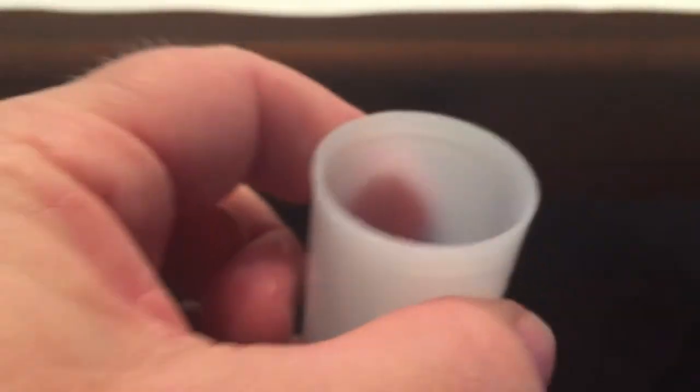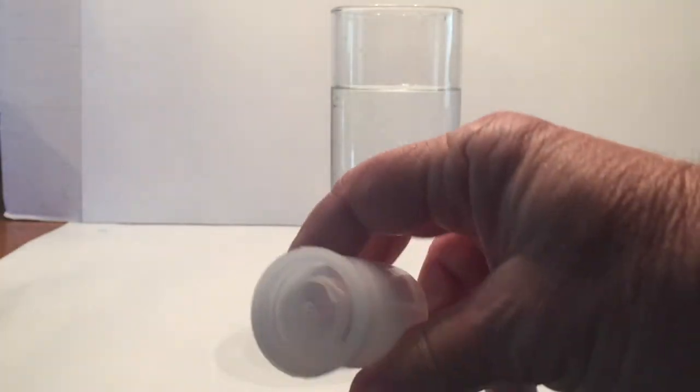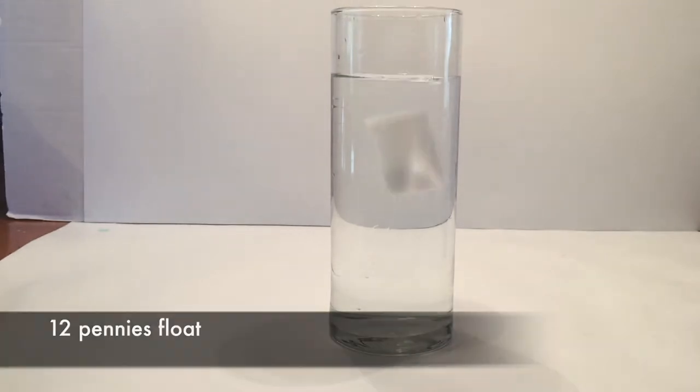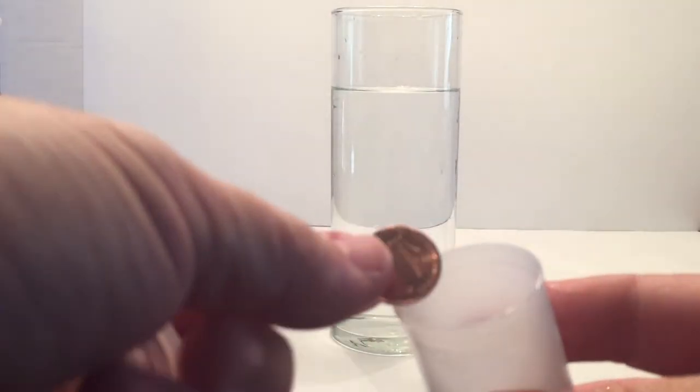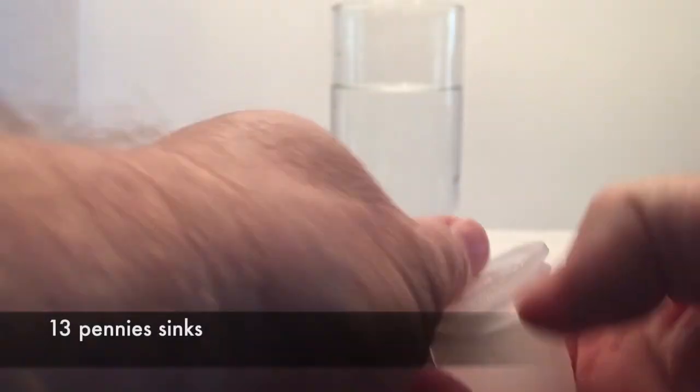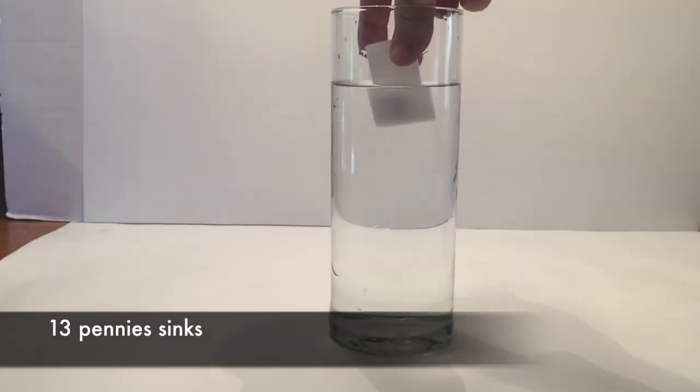So I've got 12 right here. I'm going to put the lid on and put it into the water to see what happens. And so when I do this, it floats. So now I know I'm to the point. I'm going to put one more penny in, and it's going to sink, hopefully. And so this is what you're going to want to do with your coins.